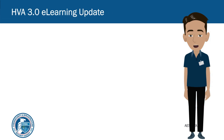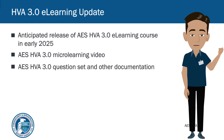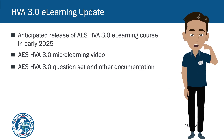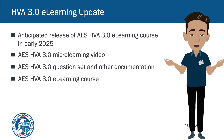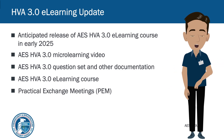Here's a quick update on the AES HVA 3.0 e-learning course. AES is anticipating the release of the course in early 2025. All AES students who have been deemed qualified in AES HVA 2.0 assessment methodology will have access to this AES HVA 3.0 microlearning video, the AES HVA 3.0 question set, other AES HVA 3.0 documentation, and the AES HVA 3.0 e-learning course — offered to all students who feel they need a refresher. Practical exchange meetings, or PEMs, will be scheduled to discuss any of your questions.